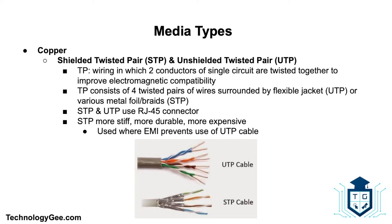The first media type is copper. We have shielded twisted pair and unshielded twisted pair. Twisted pair cabling is a type of wiring in which two conductors of a single circuit are twisted together for the purposes of improving electromagnetic compatibility. It is the most common of the major cabling types, typically consisting of four twisted pairs of wires surrounded by a flexible jacket.